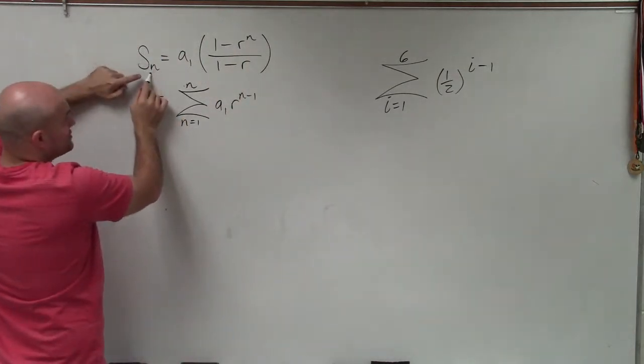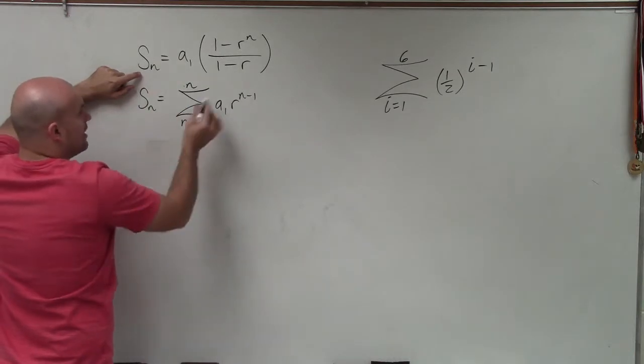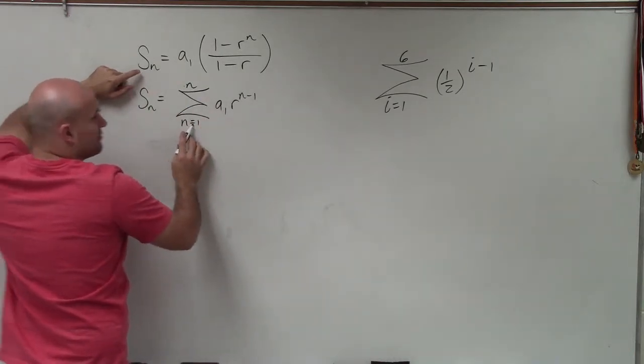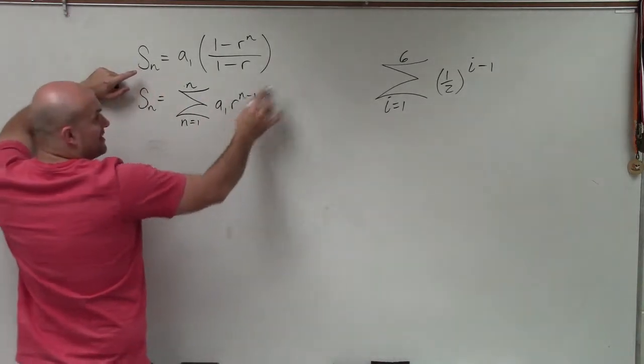So to find the sum for n terms, we need to know what a sub 1 is. Again, we look at this, make sure that we're starting at the same point, and then it's n minus 1 in the formula.